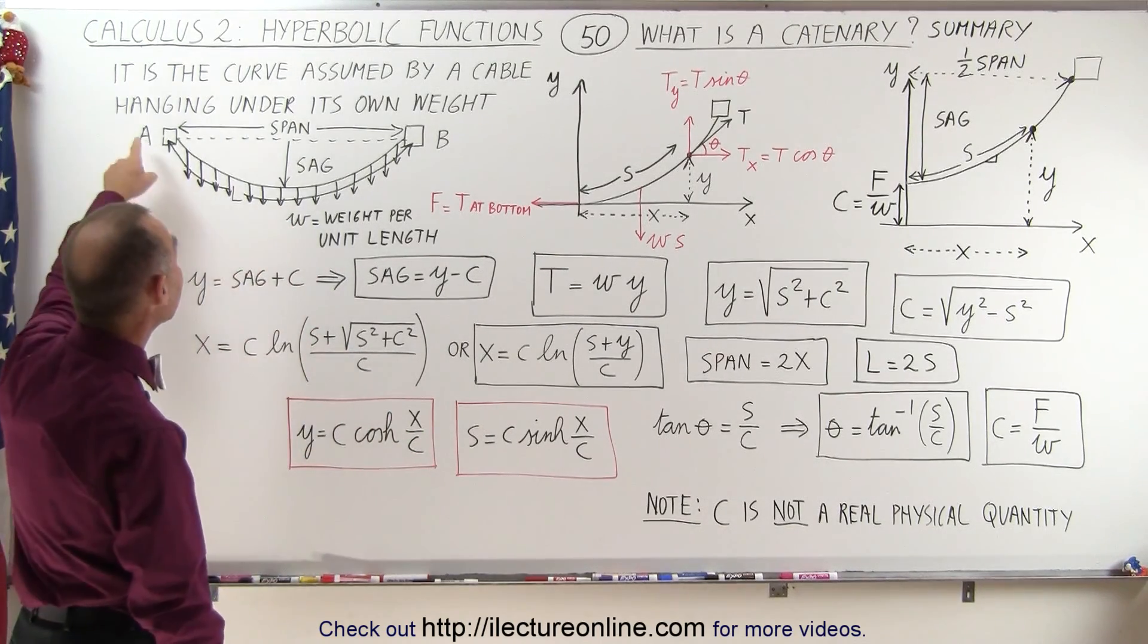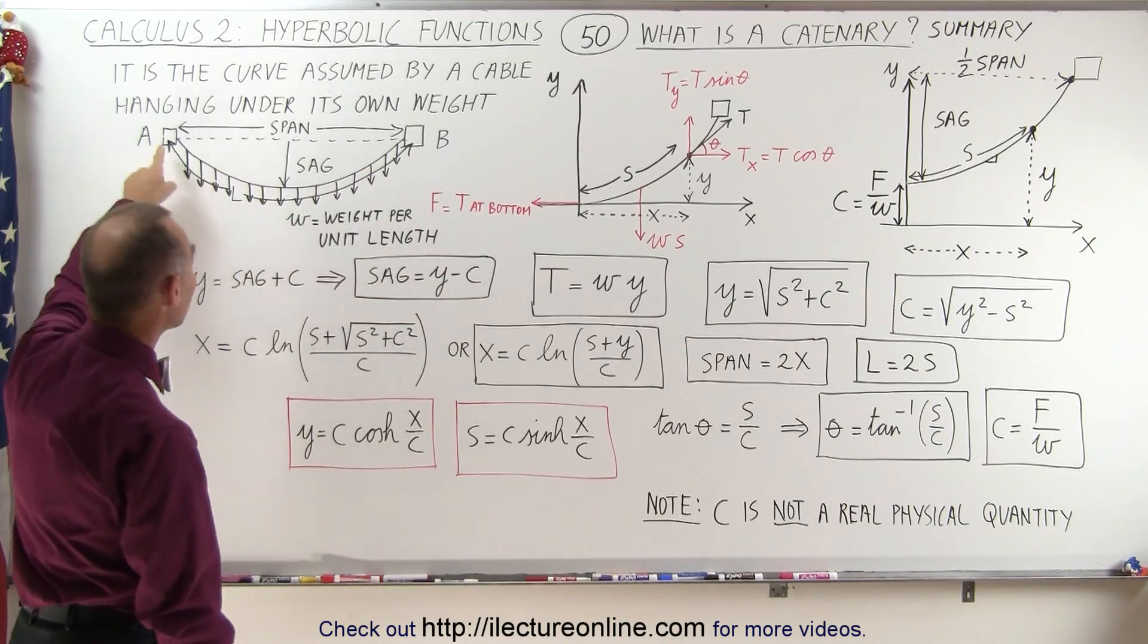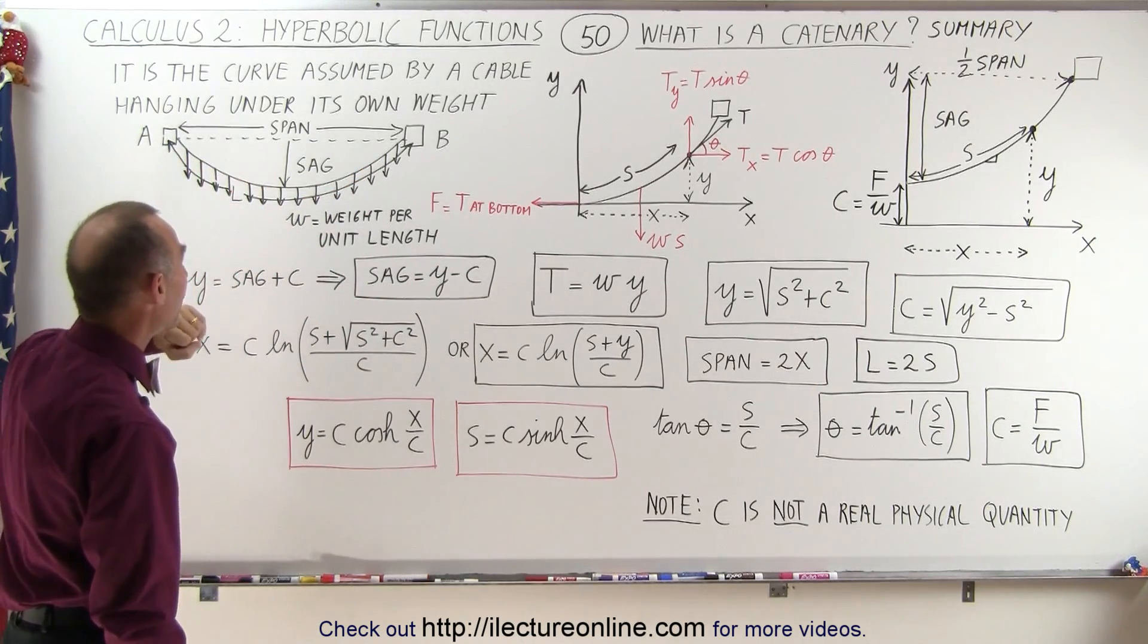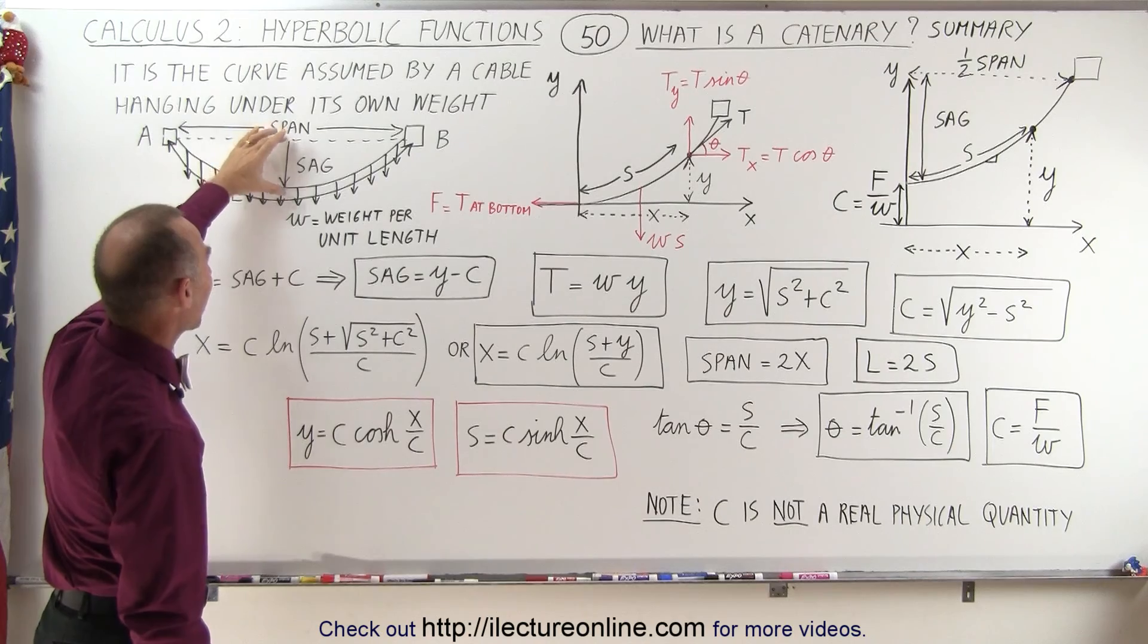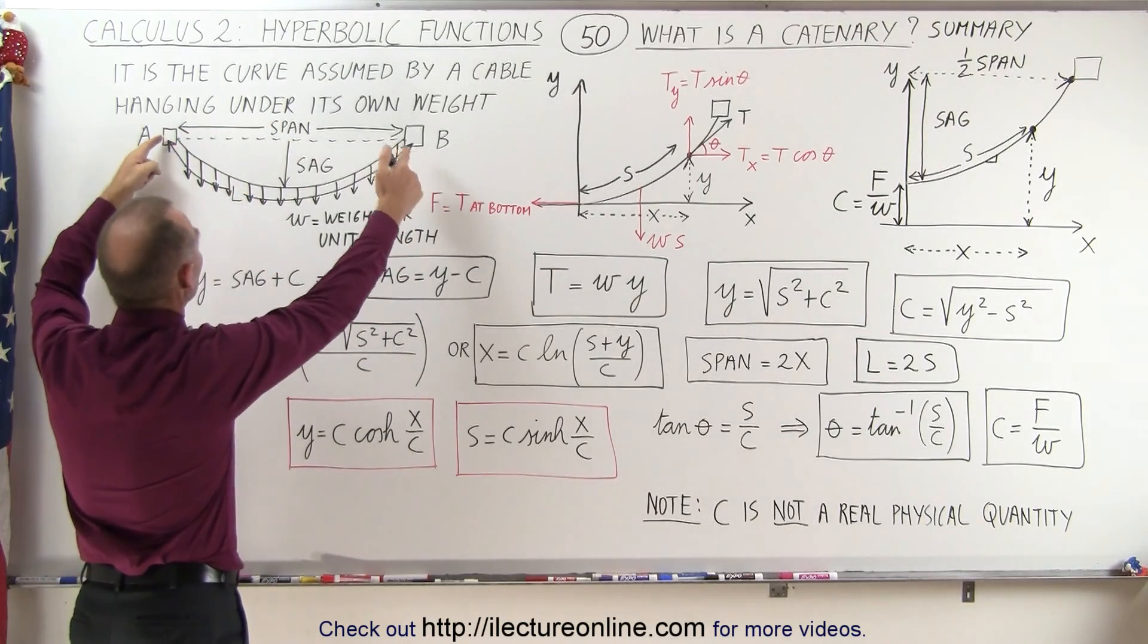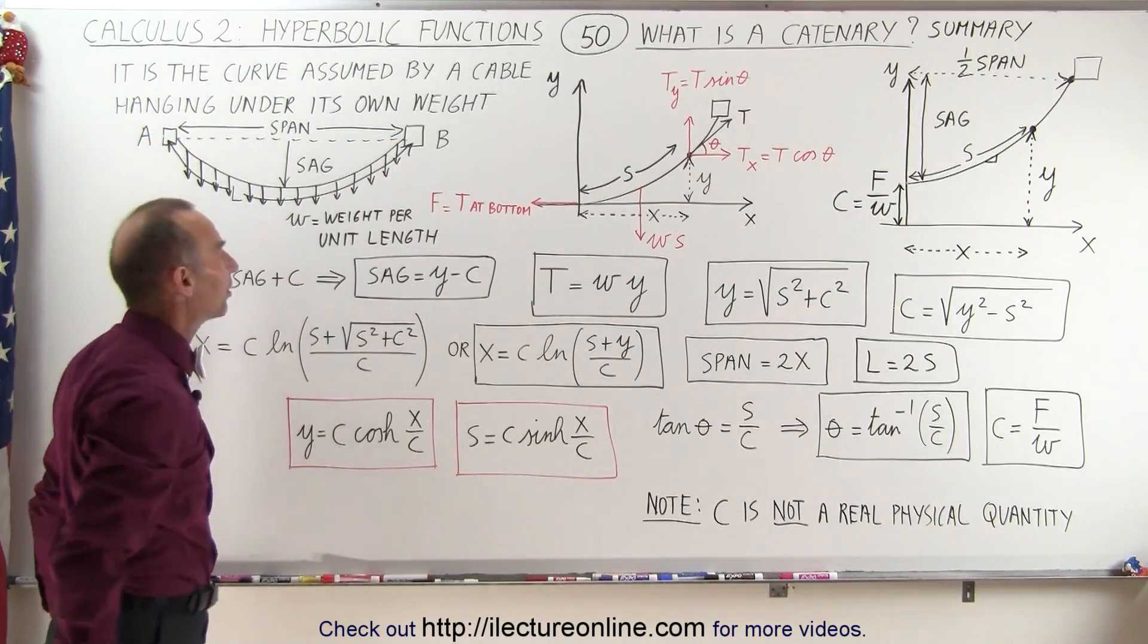First of all, a catenary again is the shape of a hanging cable, a cable that's hanging under its own weight. It will have a certain amount of sag and the span will be the distance between the two points from which the cable is hung.